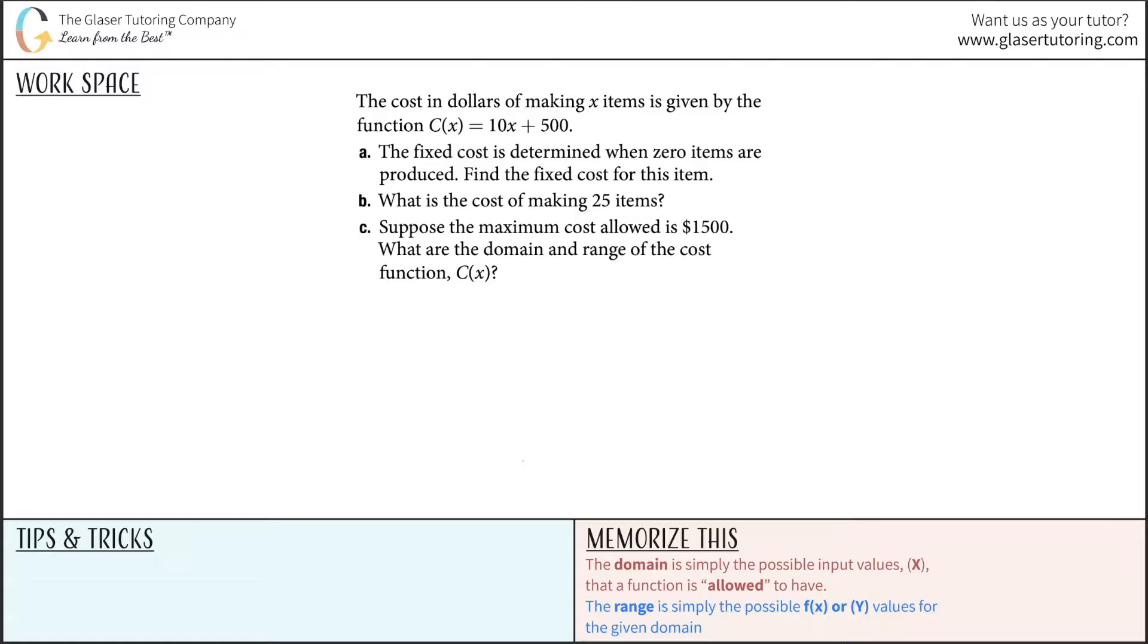The cost in dollars of making x items is given by the function C(x) equals 10x plus 500. The fixed cost is determined when zero items are produced. So letter A is asking us to find the fixed cost for this item.